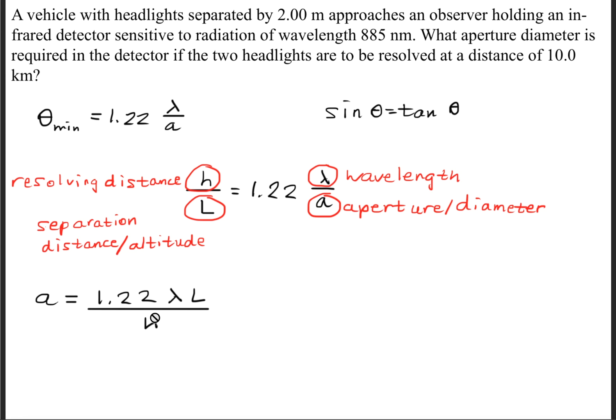Now looking for this H variable is a little bit confusing because if you quickly glance at the question, you'll think that the resolving distance is 10 kilometers. But let's read it more carefully. It says if the two headlights are to be resolved at a distance of 10 kilometers. So that means you're standing at 10 kilometers from the vehicle with headlights. The actual resolving distance is going to be 2 meters.